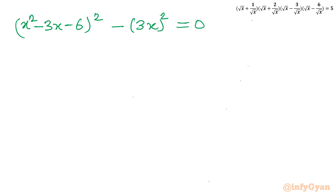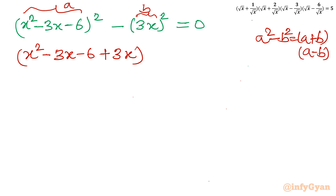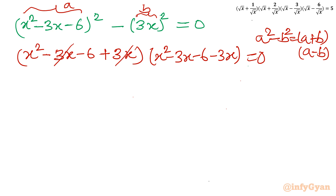Applying the difference of two squares identity again with a = x² - 3x - 6 and b = 3x, I write (a - b)(a + b) = 0, which gives: (x² - 3x - 6 - 3x)(x² - 3x - 6 + 3x) = 0. Simplifying, the -3x and +3x cancel in one bracket, yielding (x² - 6x - 6)(x² - 6) = 0.